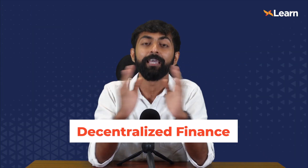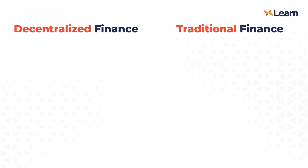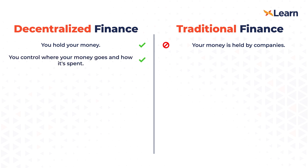DeFi is nothing hi-fi — it's decentralized finance. Imagine getting a loan within a few seconds. Imagine getting interest on your crypto holdings. Imagine getting insurance without paperwork. You don't have to stand in line; you don't have to wait. All of this is possible through the Ethereum blockchain. In DeFi, you hold your money, whereas in traditional finance, your money is being held by companies. In DeFi, you control where your money goes and how it's spent.